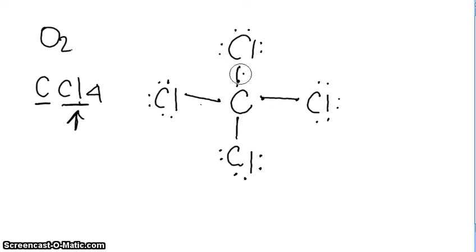So, to draw the covalent bonding in this molecule, you just take out the valence electrons that aren't being used. And it looks like this.